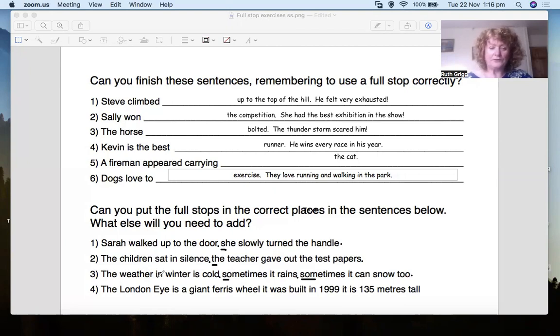The London Eye is a great giant, sorry, Ferris wheel. It was built in 1999. It is 135 meters tall. So again, full stop on the end. But this has several sentences. Let's see where the phrases are. The London Eye is a giant Ferris wheel. There you go. You just made a statement there.